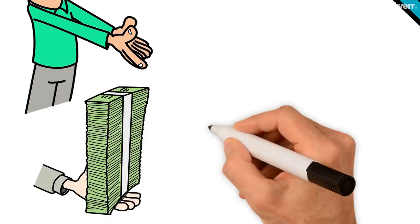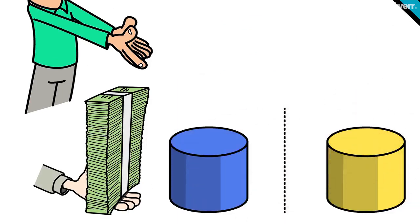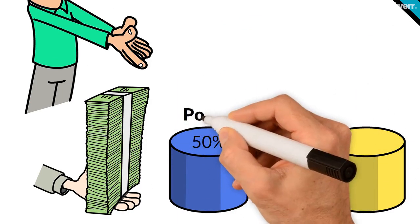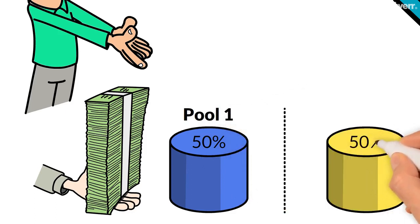The contribution goes into two separate pools. 50% of the contribution goes into Pool 1 and 50% goes into Pool 2.